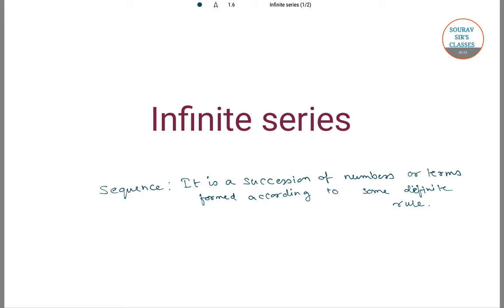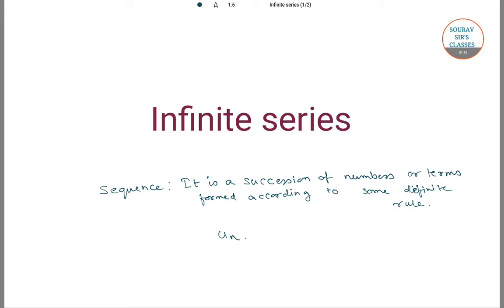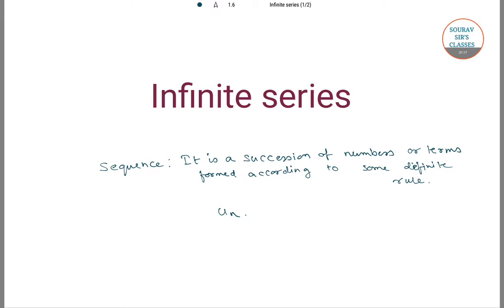The nth term of a sequence is denoted by un. For example, if un equals 2n plus 1, then the following sequence would be 3, 5, 7, 9, and so on, where each term can be represented in the form of 2n plus 1.